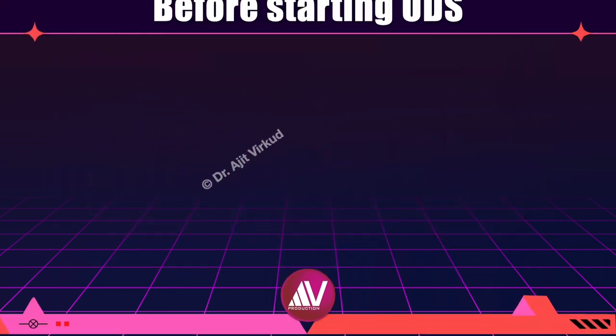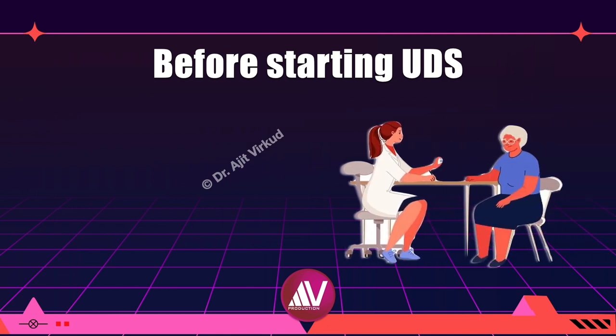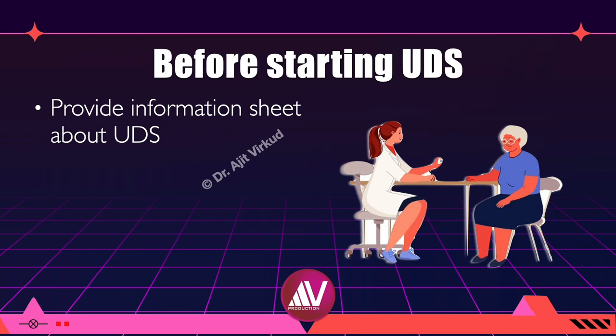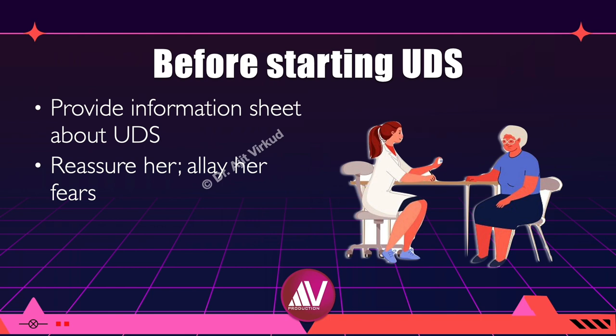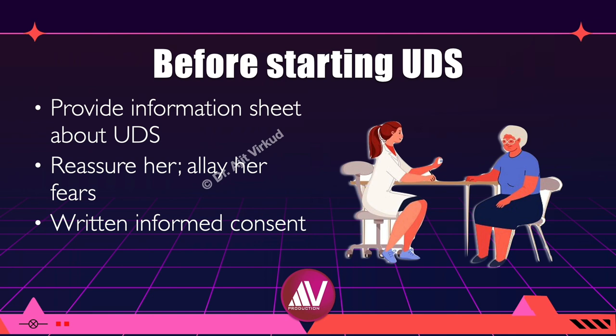Once at the lab, give her an information sheet about the UDS she is about to undergo. The patient is usually nervous and frightened. Talk to her and provide her with all the information about the study so that she knows what to expect. Reassure her and tell her to follow the instructions properly. Tell her not to be embarrassed about leaking urine because that is exactly what she has come to test. Take written informed consent. The test cannot be done under sedation or anesthesia as the patient's active participation is a must.